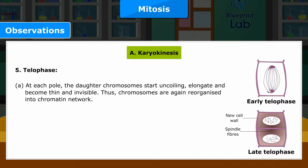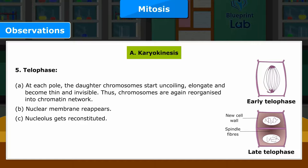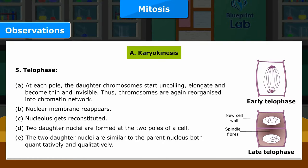5. Telophase: A. At each pole, the daughter chromosomes start uncoiling, elongate and become thin and invisible. Thus, chromosomes are again reorganized into chromatin network. B. Nuclear membrane reappears. C. Nucleolus gets reconstituted. D. Two daughter nuclei are formed at the two poles of a cell. E. The two daughter nuclei are similar to the parent nucleus both quantitatively and qualitatively.